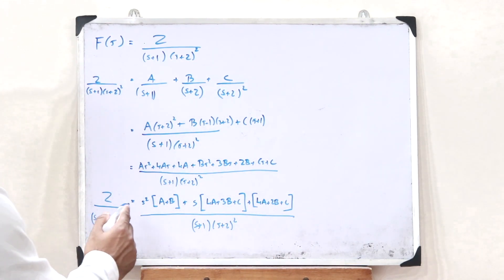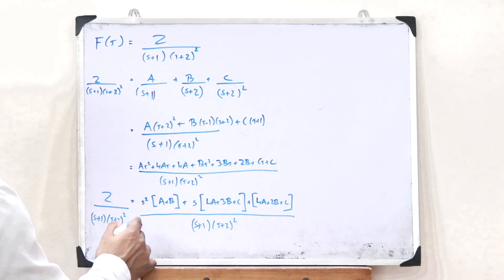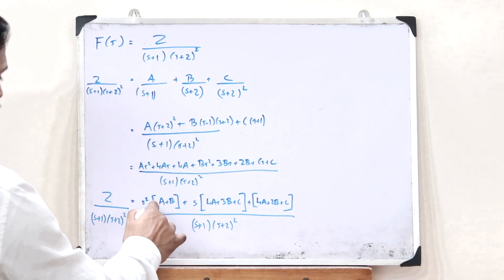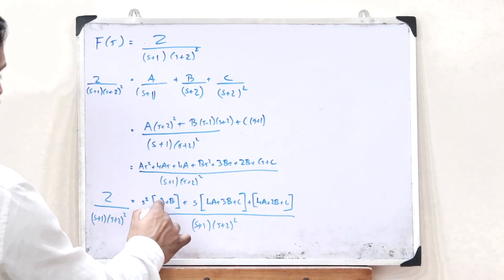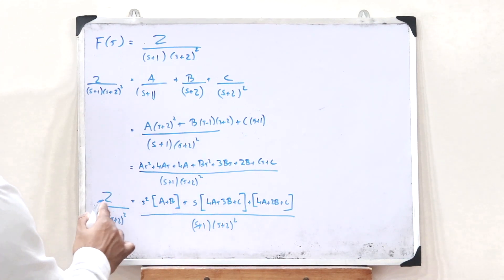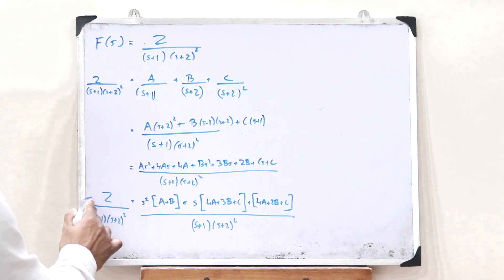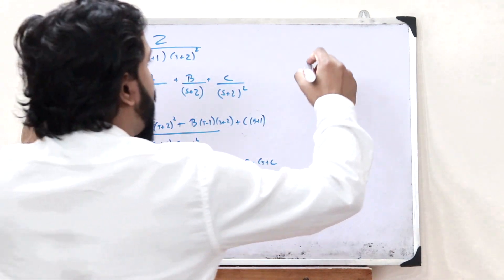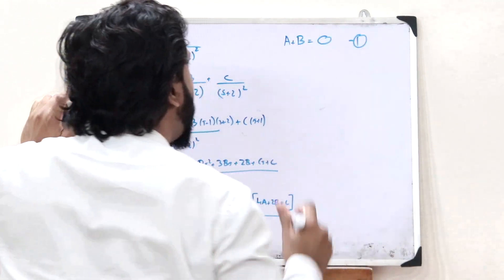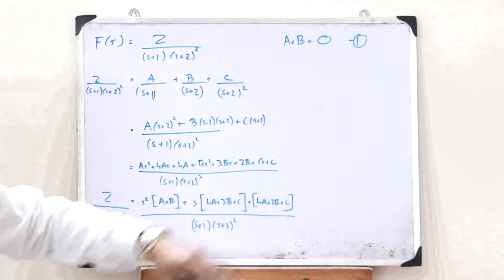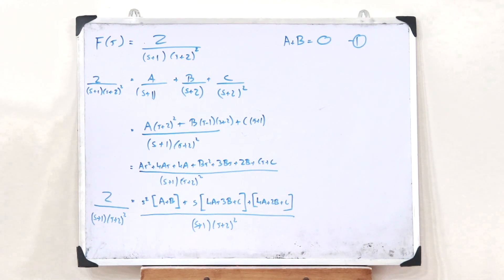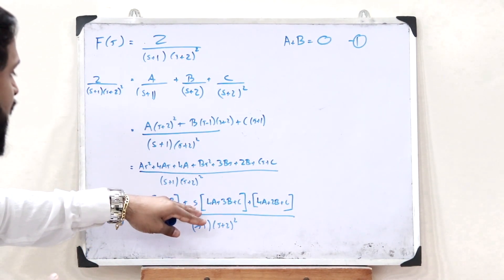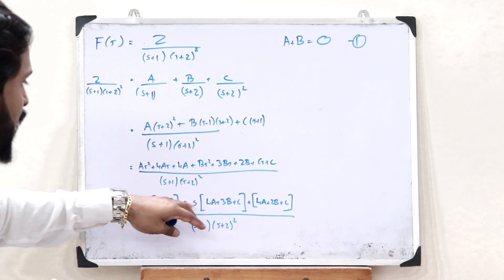Equating the s² components: the coefficient of s² on the left is A + B, but there are no s² terms on the right side, so the first equation becomes A + B = 0.